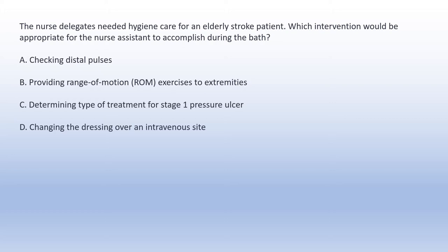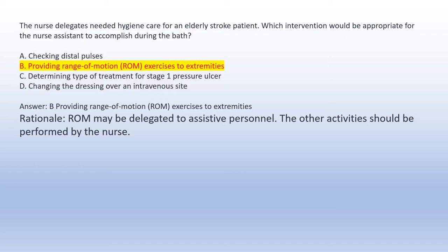The nurse delegates needed hygiene care for an elderly stroke patient. Which intervention would be appropriate for the nurse assistant to accomplish during the bath? A. Checking distal pulses. B. Providing range of motion (ROM) exercises to extremities. C. Determining type of treatment for stage 1 pressure ulcer. D. Changing the dressing over an intravenous site. Answer B: Providing range of motion exercises to extremities. Rationale: ROM may be delegated to assistant personnel. The other activities should be performed by the nurse.